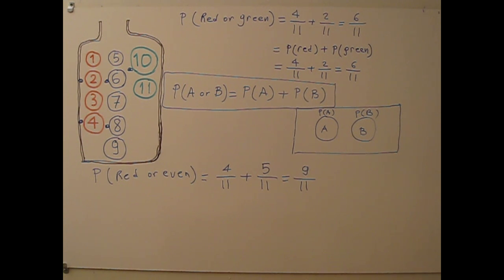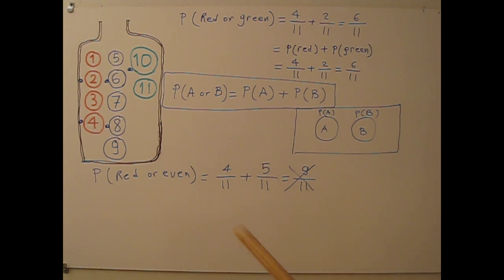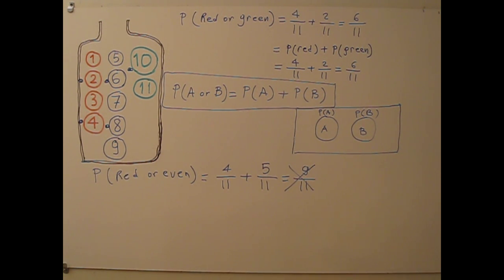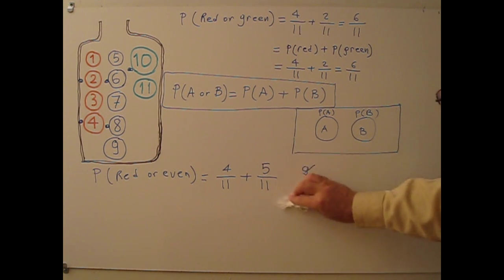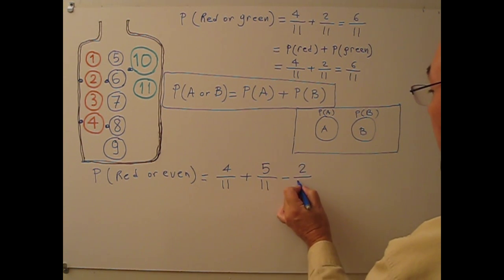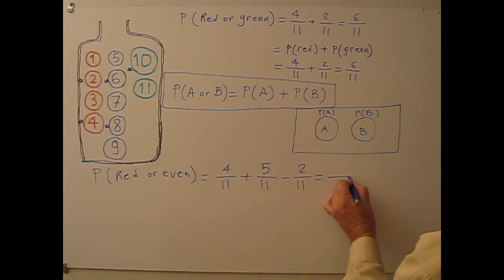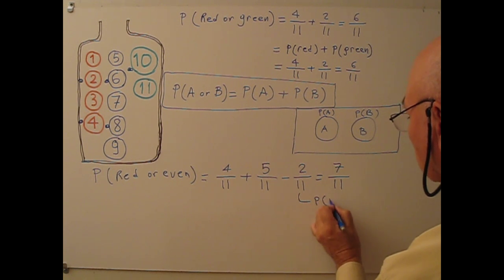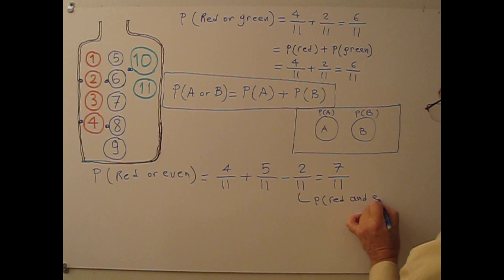But is this correct? It is not correct. Because balls 2 and 4 are both red and even — that is why we counted them twice. So we have to subtract them. 2 balls are both even and red, so I subtract 2 over 11 and get 7 over 11. This subtracted term is basically P(red and even).